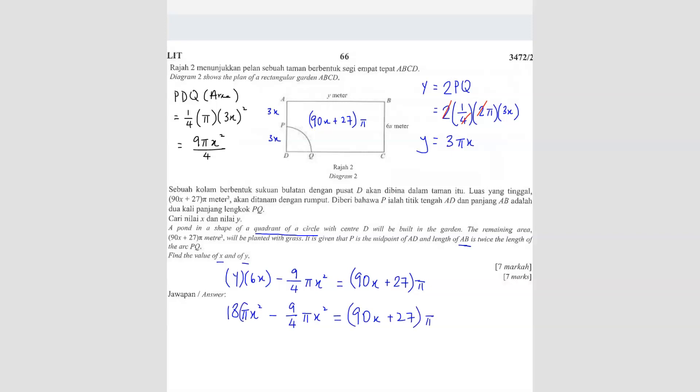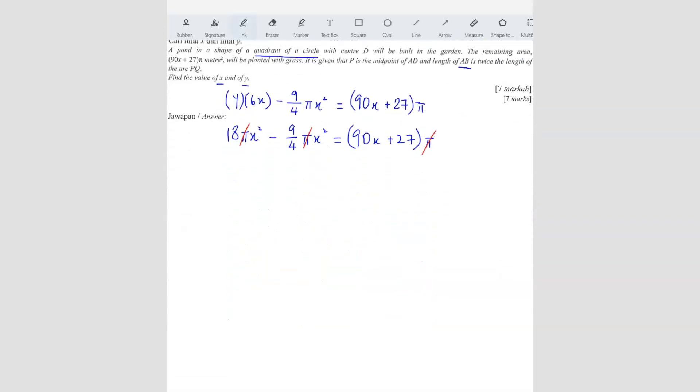Now you notice here, all of them got π. So I can actually factorize the π out of this and then cancel with this. So no more π. So now it becomes a bit easier. So what do we do now? Should we multiply everything by 4 so we can eliminate the fraction? Let me rearrange first before we do anything.